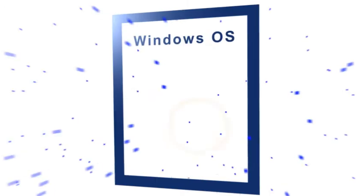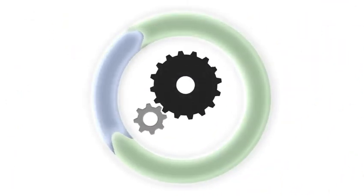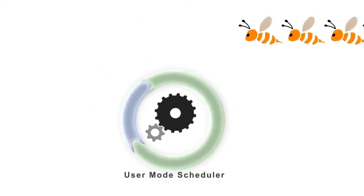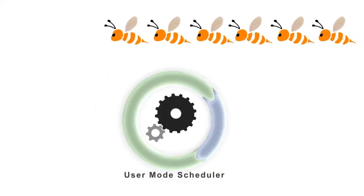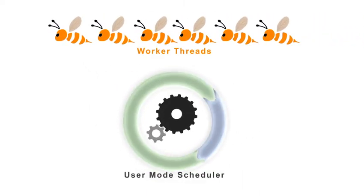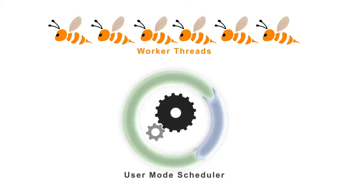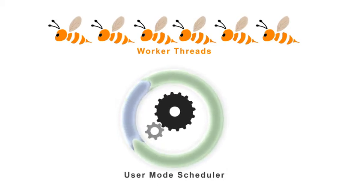Why do waits occur? Within the Windows operating system, SQL Server runs its own mini operating system. User mode scheduler and worker threads are the major part of SQL Server's operating system. The scheduler handles memory, IO, and processor for SQL Server tasks, as it knows its tasks better than the Windows operating system.